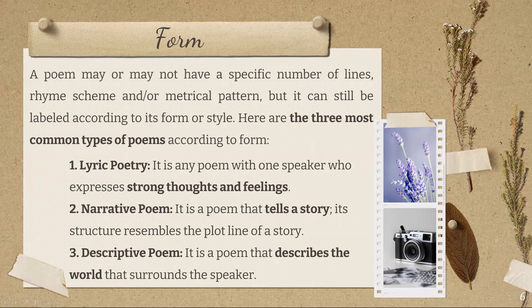Descriptive poem is a poem that describes the world that surrounds the speaker. It uses elaborate imagery and adjectives. While emotional, it is more outward-focused than lyric poetry, which is more personal and introspective. In a sense, almost all poems, whether they have consistent patterns of sound or structure, or are free verse, fall into these three categories — or of course, they may be a combination of two or three.